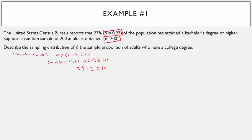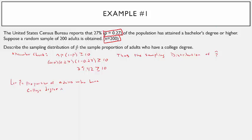That gives us 39.42, which is greater than or equal to 10. Thus the sampling distribution of p-hat — the proportion of adults who have a bachelor's degree or higher in a sample of 200 — is normally distributed.